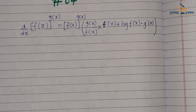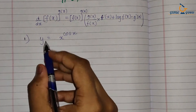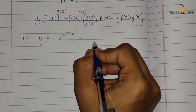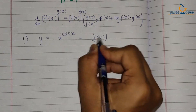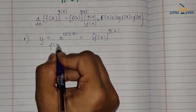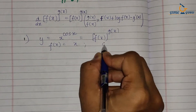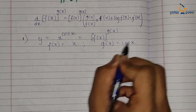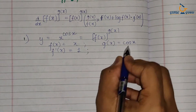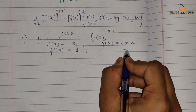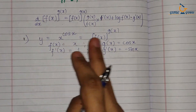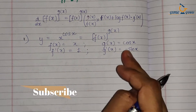The first question is: y = x^(cos x). Here you can relate that this is f(x) to the power g(x), where f(x) = x and g(x) = cos x. Writing these separately: the derivative of x is 1, that is f'(x), and the derivative of cos x is −sin x, which is g'(x). So I have identified the functions and calculated their derivatives.